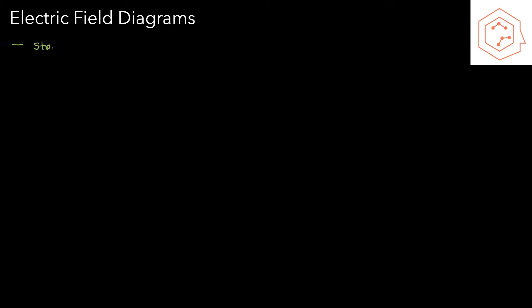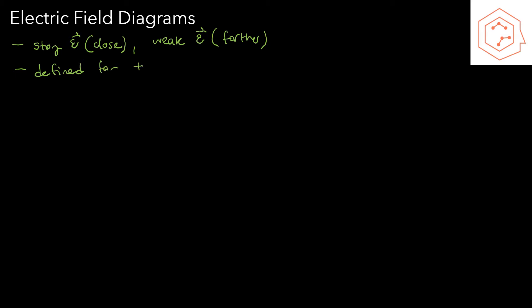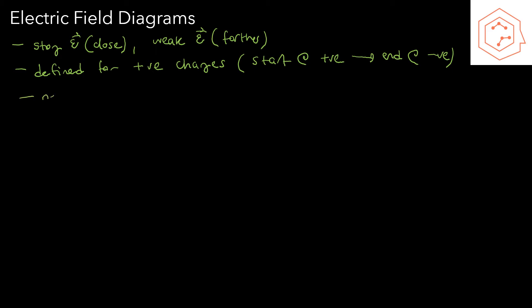You might be asked to draw the electrical field diagram for a system of charges. There are a couple of things you'll want to know. Strong electrical fields are represented by close-together lines, and weak electrical fields are represented by farther-apart lines. These vectors are defined for positive charges, so they start at positive charges and end at negative charges. These lines never cross because they are vectors — you can't have a vector going in two different directions at one point in space; instead you replace it with the resultant of those vectors.